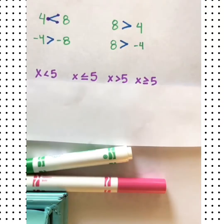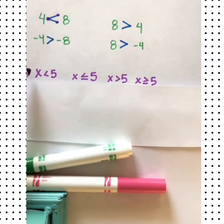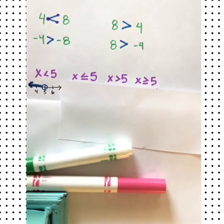Now let's look at when variables are involved. Let's also talk about some words you might see in word problems and how these will appear on a number line. Starting with x is less than 5. If we put this on a number line, it means that all values that are less than 5 are solutions to this inequality.